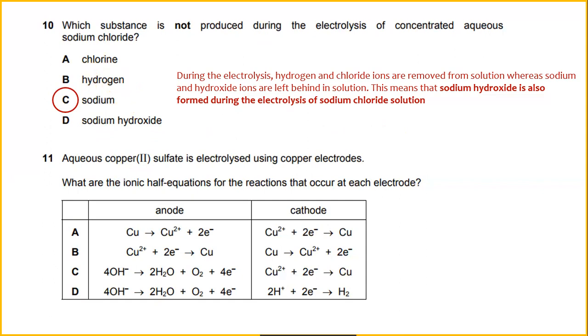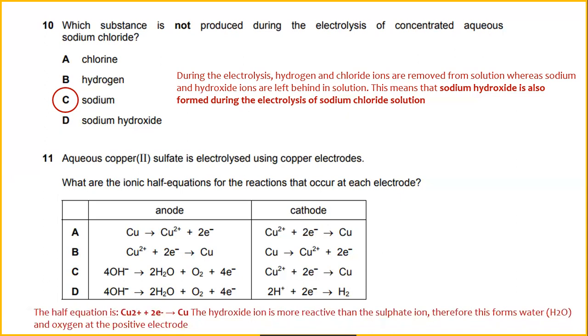Aqueous copper sulfate electrolysis during using copper electrode. What are the ionic half equations for the reaction that occurs at each electrode? So you might see the half equation is Cu2+ plus 2 electrons to produce Cu. The hydroxide ion is more reactive than the sulfate ion. Therefore, this forms water and oxygen at the positive electrode. So it's stated that at the cathode, they produce Cu2+ plus 2 electrons. And these two reactions to produce Cu. So at where? At the positive electrode. So cathode is the positive electrode. So what is actually at the ionic is if you can switch the equation to become Cu to form Cu2+ plus 2 electrons. The answer will be A.